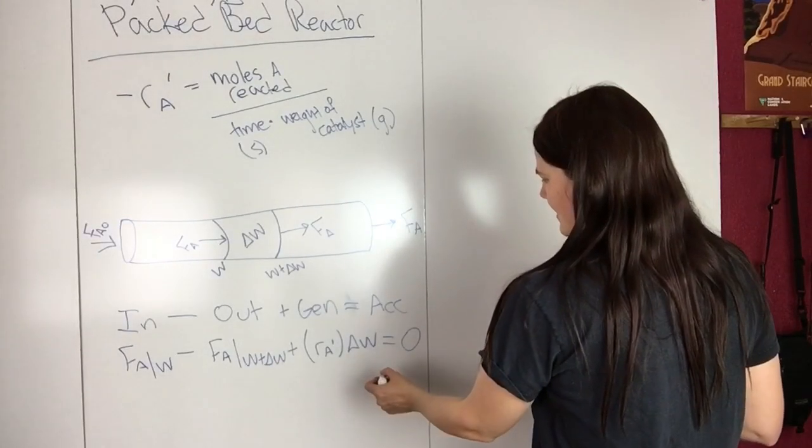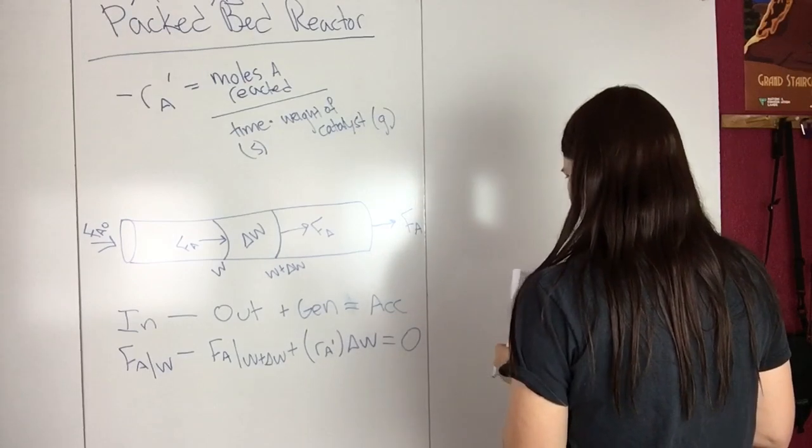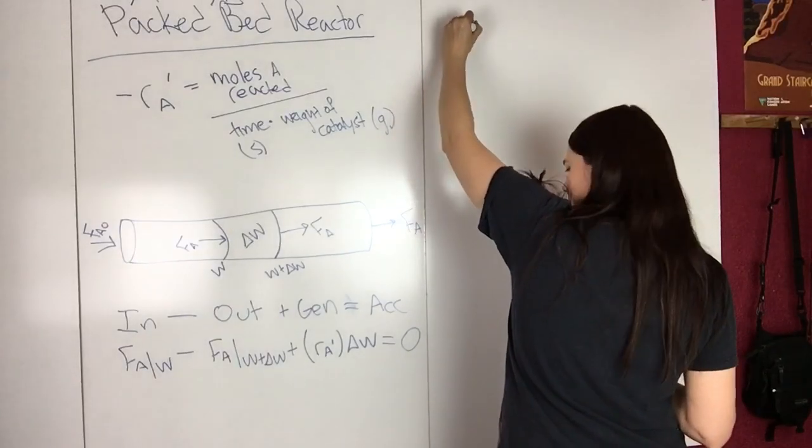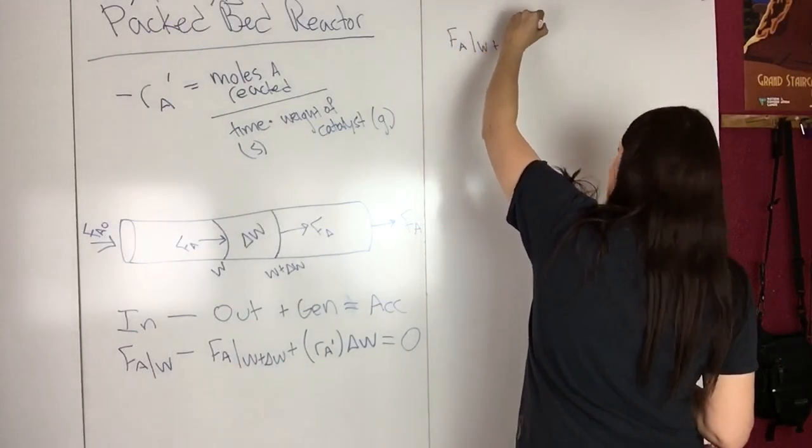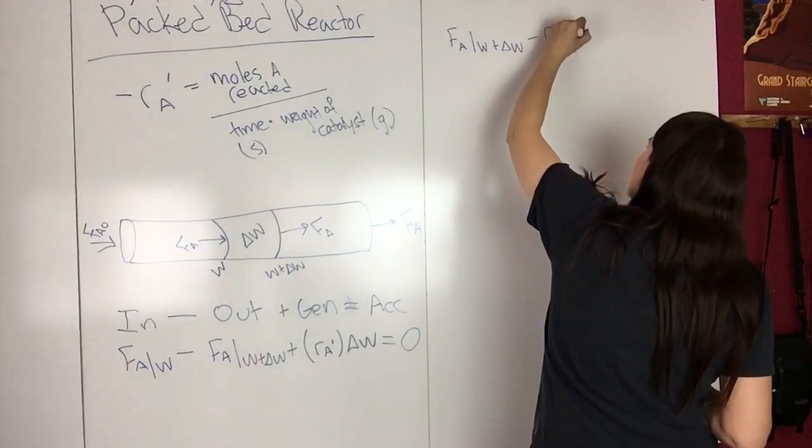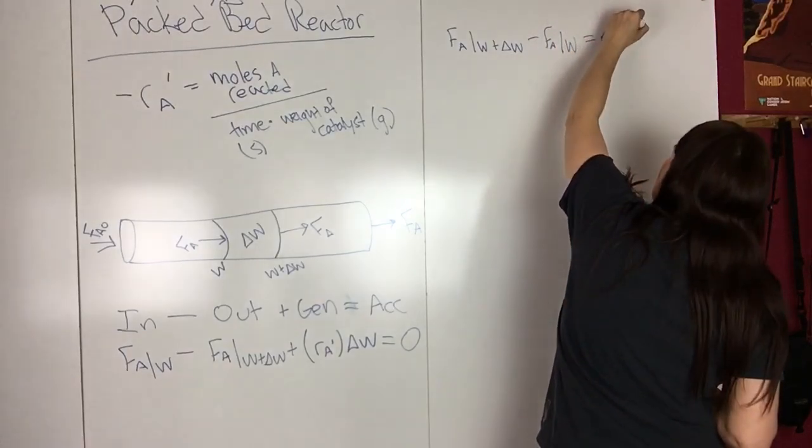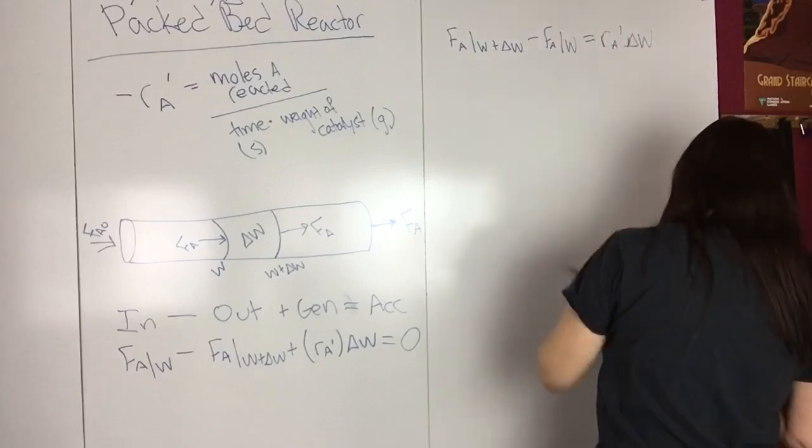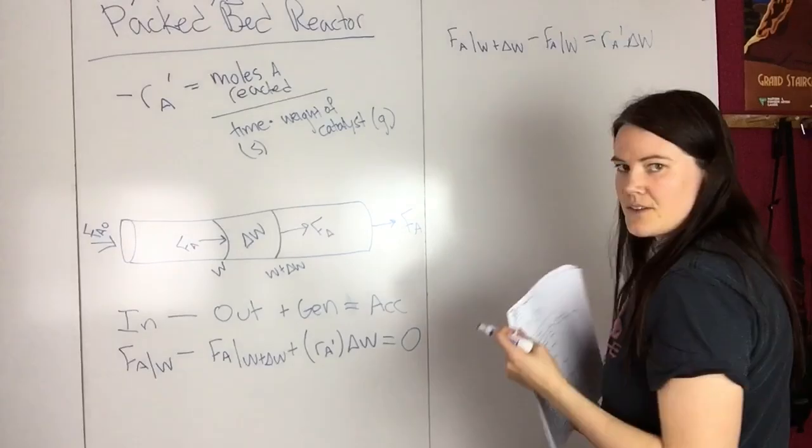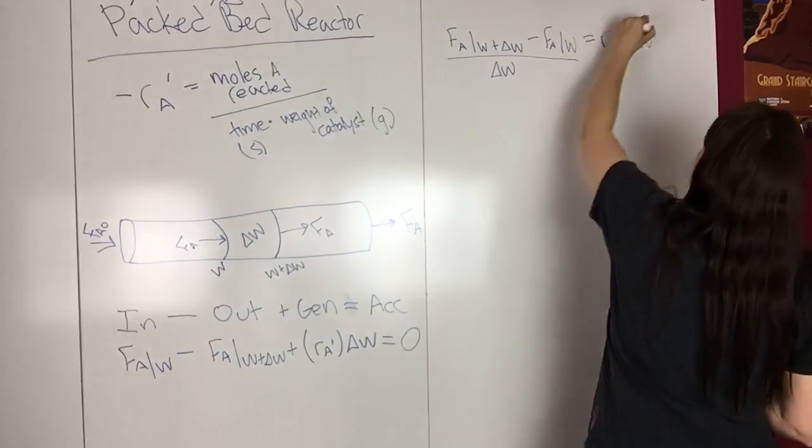And if we rearrange, so we want to rearrange this and divide by delta W, so we can rearrange this, so F_A at W plus delta W minus F_A at W equals R_A prime delta W, so then if we take that and we divide by delta W, then that goes away.